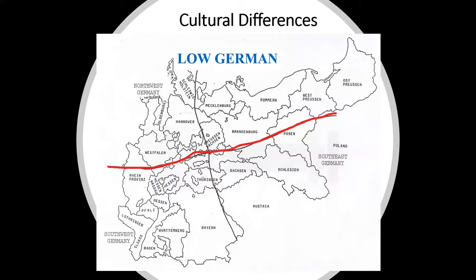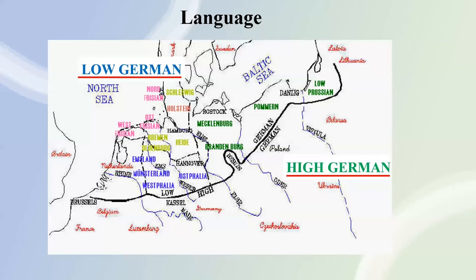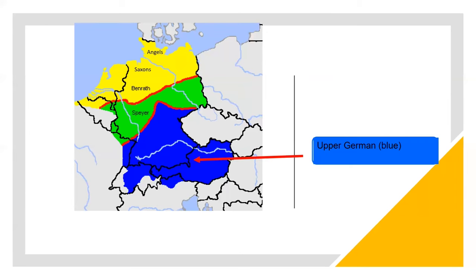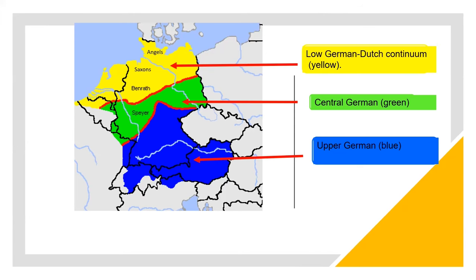The horizontal line separates the area in the north where Low German is spoken from the area in the south where High German is spoken. High German is subdivided into Upper German in the south and Central German. Low German Dutch is in the north. It was this Low German area that the Germanic tribes — mostly the Angles and the Saxons — who invaded England in 450 AD were from, and from which the English language originated.